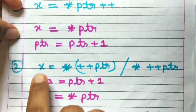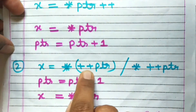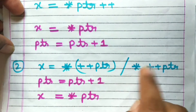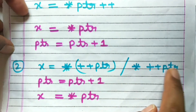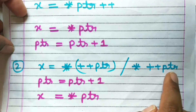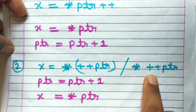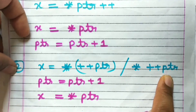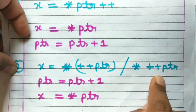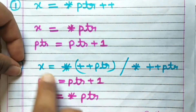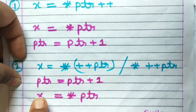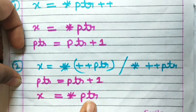Next is x = *(++ptr), or *++ptr. As this expression evaluates from right to left, the increment operation is first performed on PTR, and then the value after this increment operation is assigned to x. So: PTR = PTR + 1, and x = *PTR.